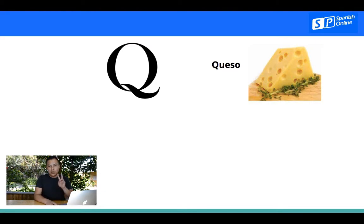But we can use just in two ways. The first one is Q, U, E, and Q, U, I. For example, queso, or for example, quiero, that means I want, and so. We just have two ways to use the Q, with Q, U, E, and Q, U, I. And that's it.